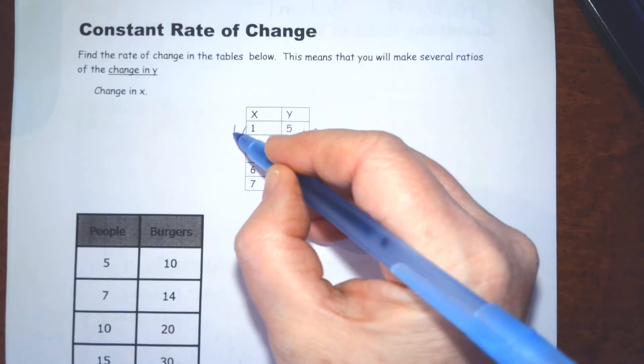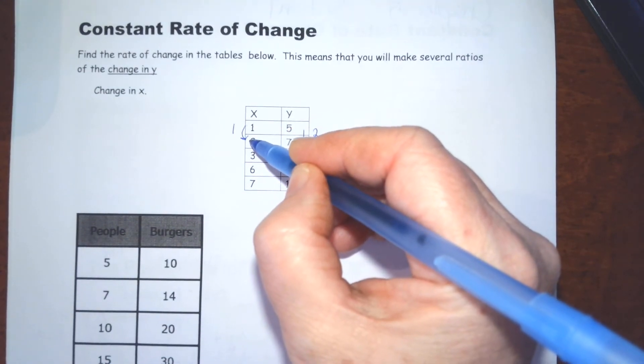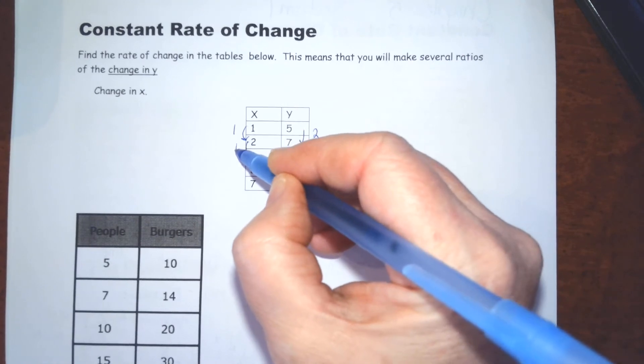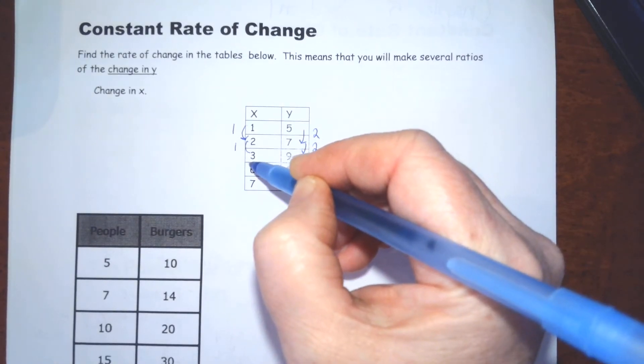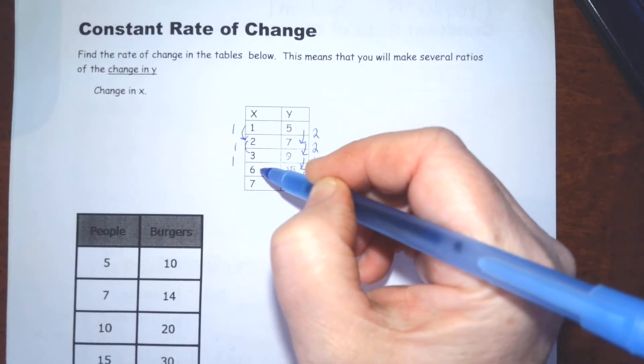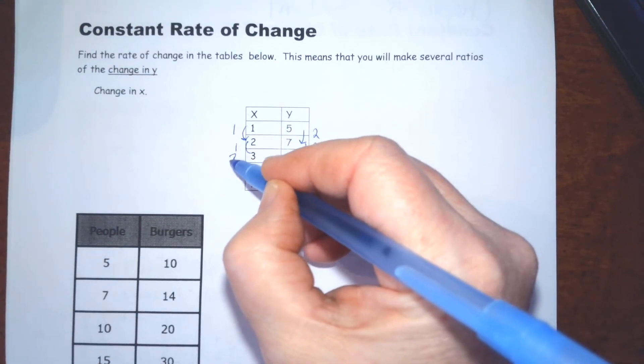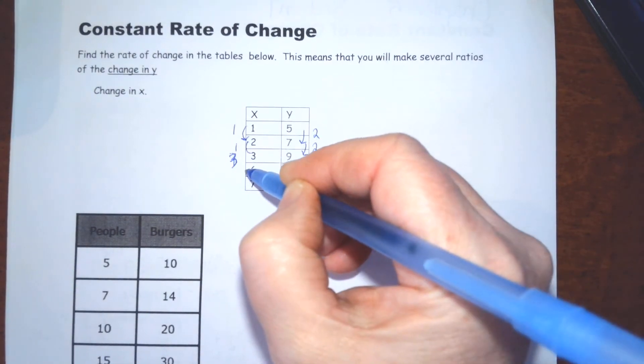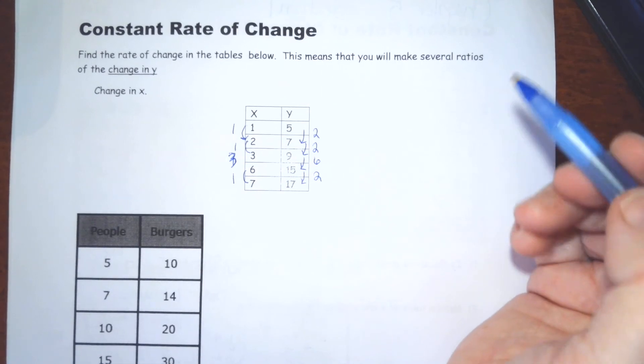Now, determine the way that x changes. From 1 to 2, it increases by 1. From 2 to 3, it increases by 1. From 3 to 6, it increases by... No, it doesn't. It increases by 3. And from 6 to 7, it increases by 1.